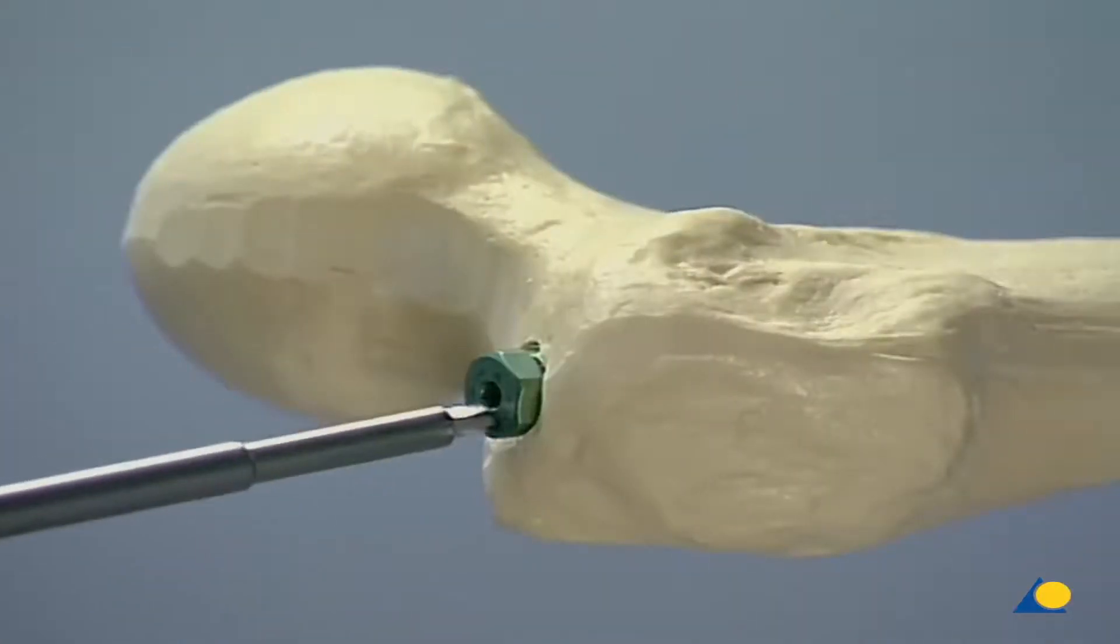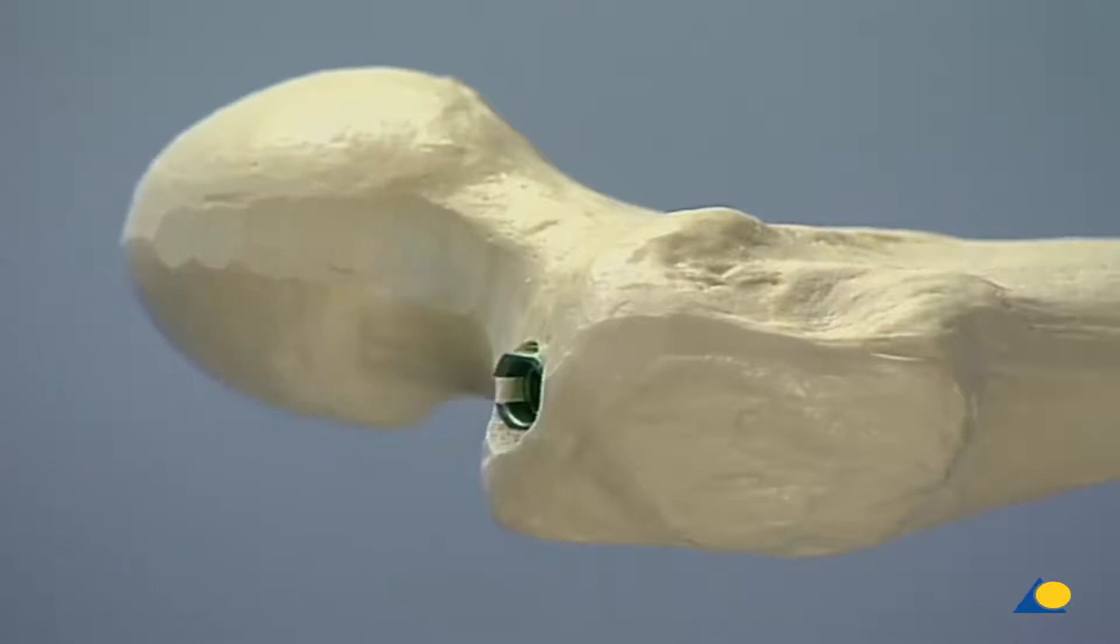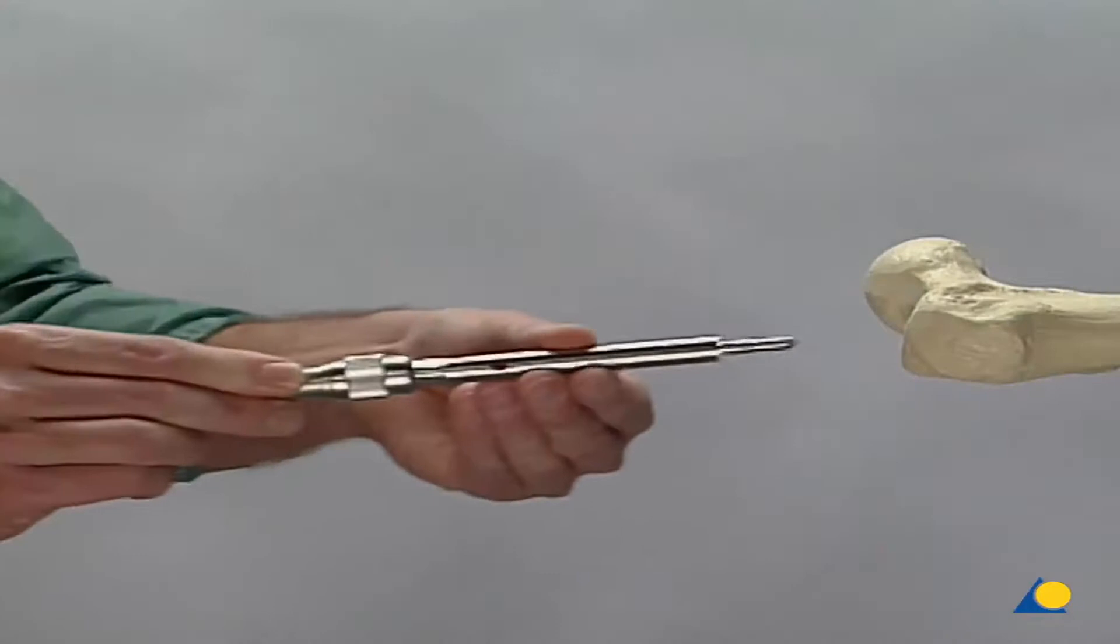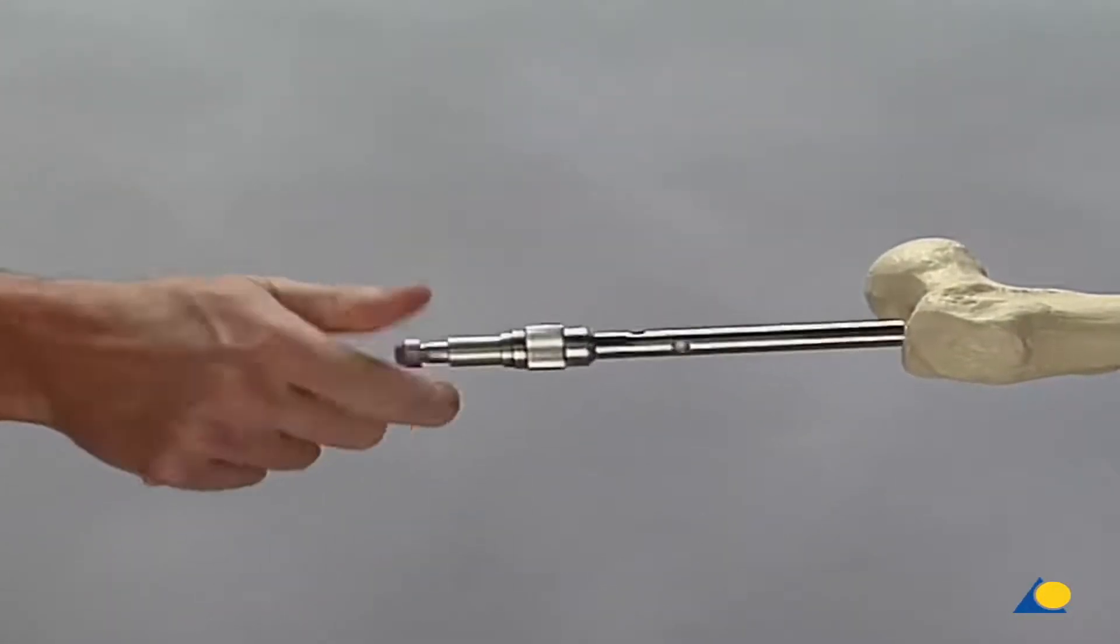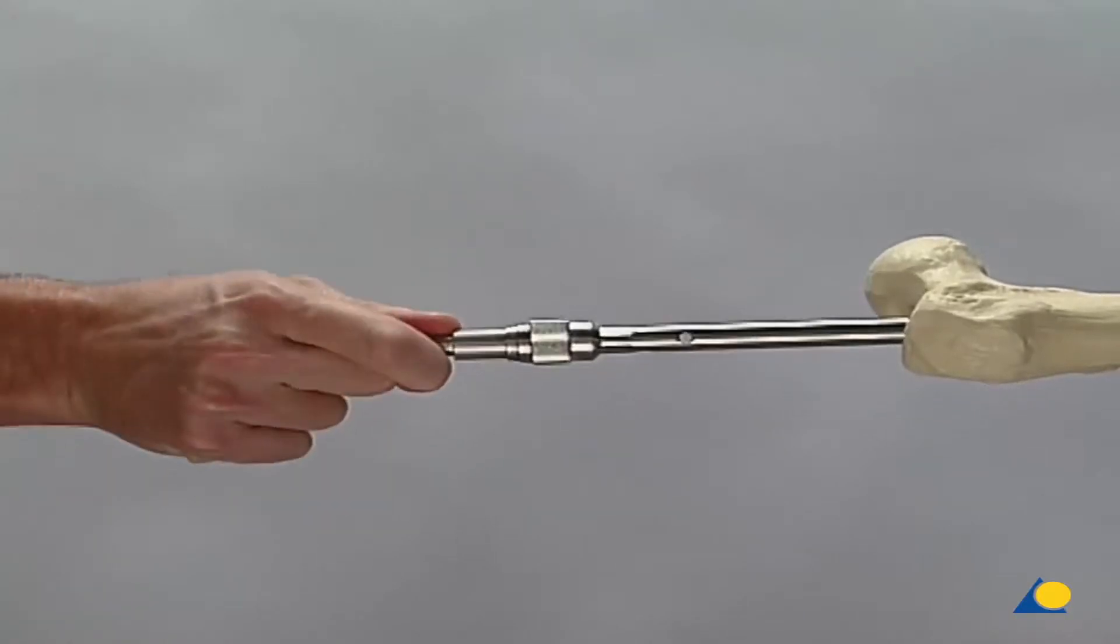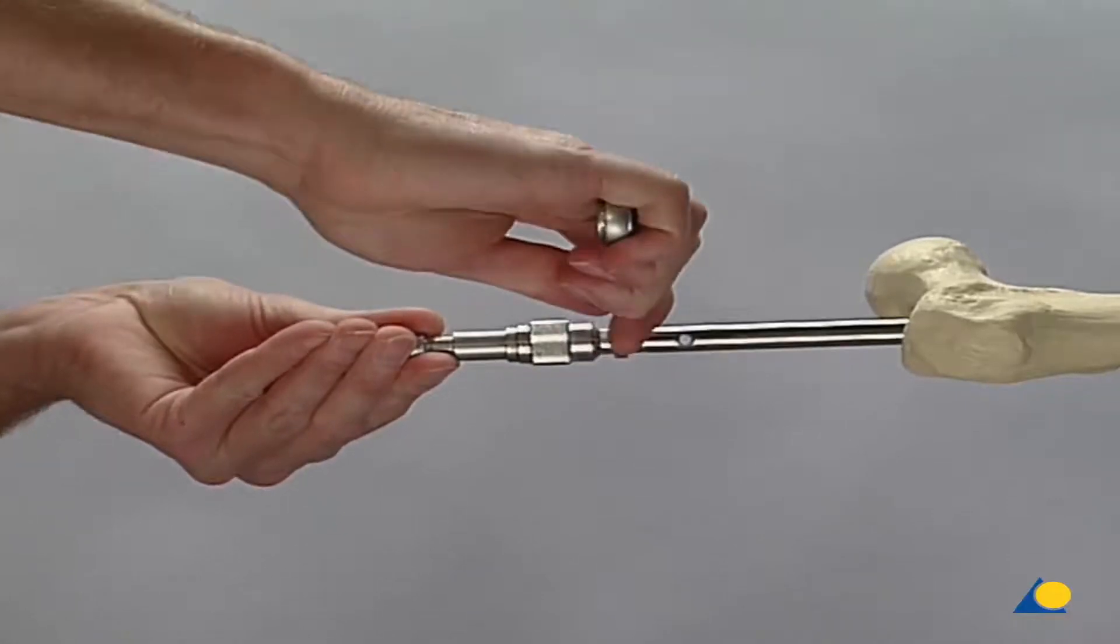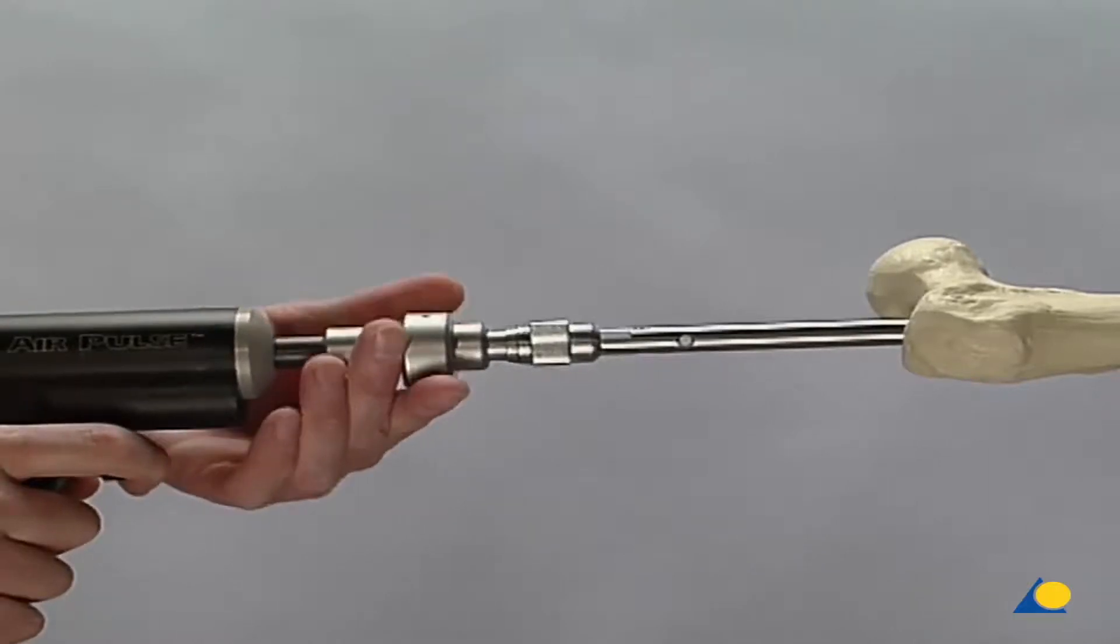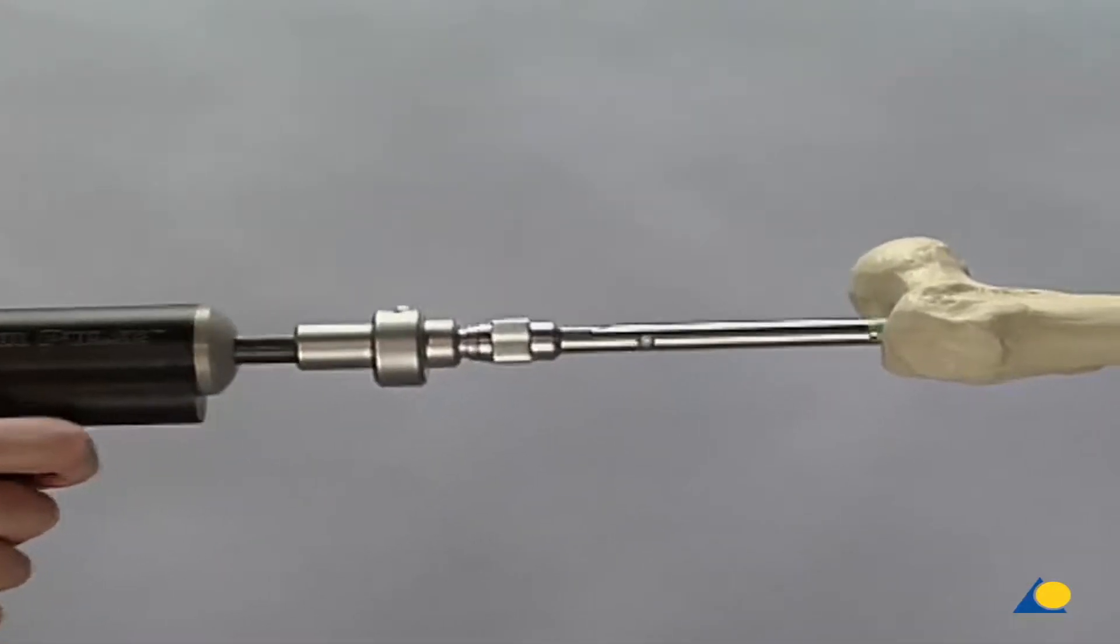For the extraction of the UFN, the end cap is removed. The extraction screw is screwed into the nail and tightened. The locking bolts are removed and the air pulse is mounted. The nail is then extracted with gentle, well-regulated impulses.